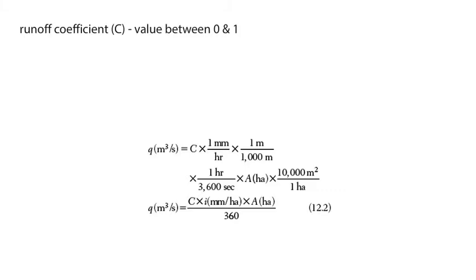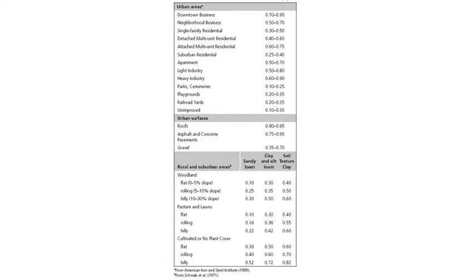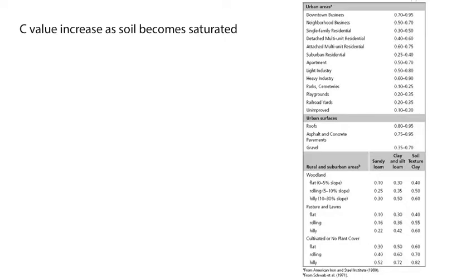The runoff coefficient, C, is a value between 0 and 1. Zero represents a completely pervious surface from which there is no runoff, while 1 represents a completely impervious and wetted surface from which there is total runoff. Table 12.1 from the figures and tables document contains suggested C values for a variety of surface conditions. For pervious areas, the C value would increase as the soil becomes saturated.